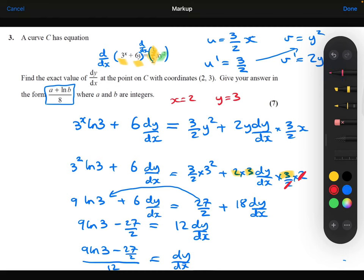Let's times the top by 2, let's times the bottom by 2, just to get rid of this awkward thing. So we'll get (18·ln 3 - 27)/24.